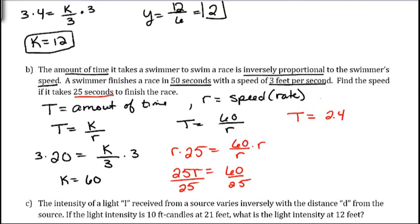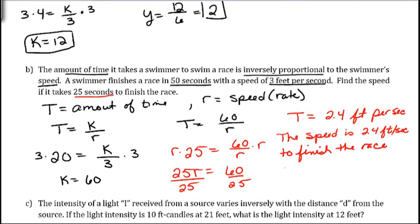And so that will be our speed. And let's see, what are the units on this? So feet per second. Okay, and then always make sure that you write a sentence to answer the question. So the speed is 2.4 feet per second to finish the race.